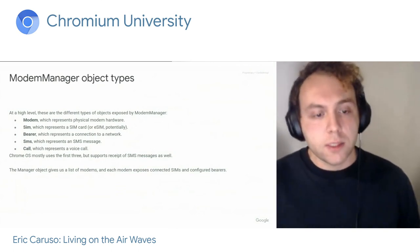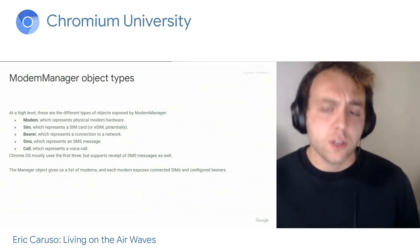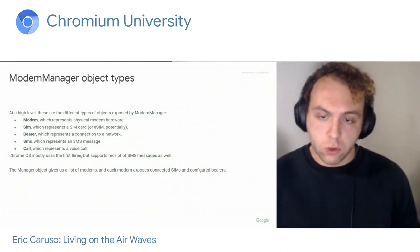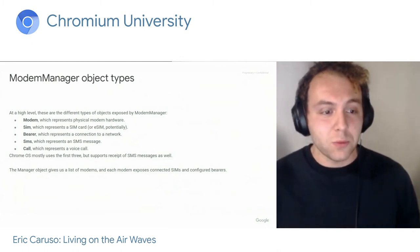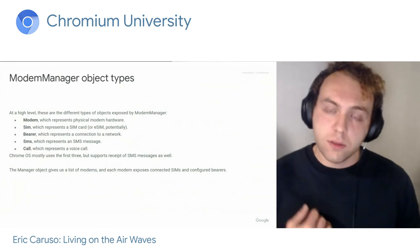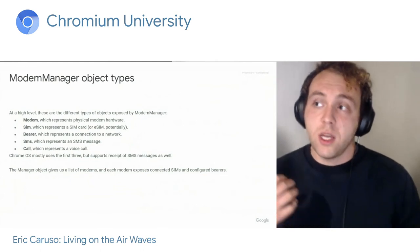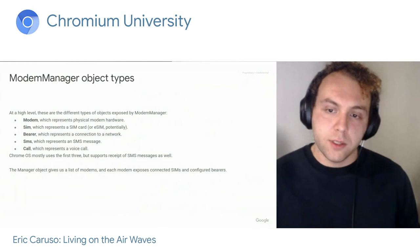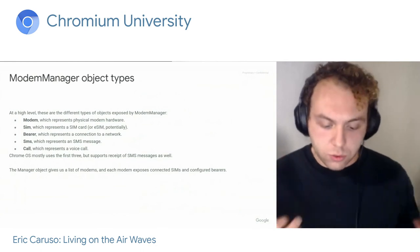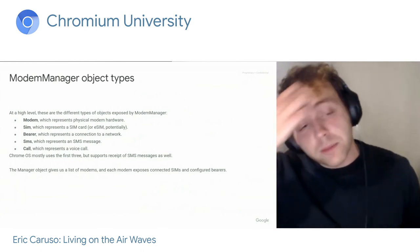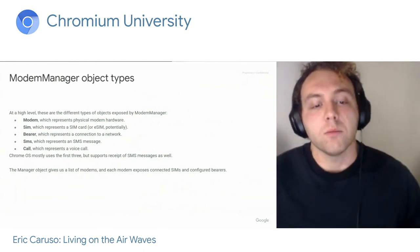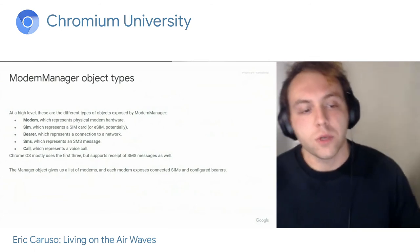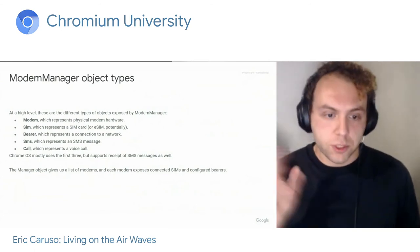There are also two other types of objects. SMS is something we only support a little bit — we support receipt of SMS because some activation flows use it, and some operators use it to tell you if you're about to hit your data limit. But otherwise you can't send SMS from a Chromebook, so we don't worry about it too much. And the other one is voice calls, which we pretend don't exist.